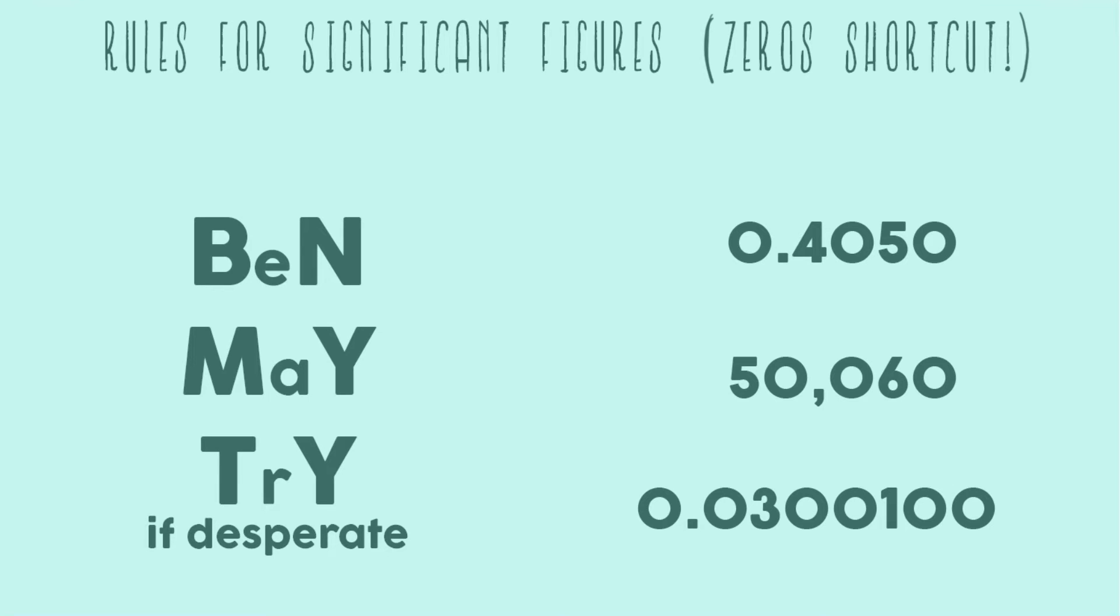All right, let's talk about rules for significant figures. In this video I'm going to be talking specifically about a shortcut for the sig fig zeros because I think all students pretty much agree that the zeros are where sig figs can get tricky.